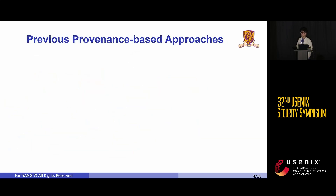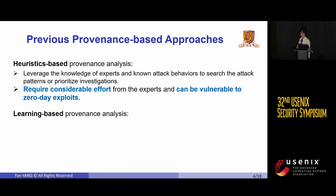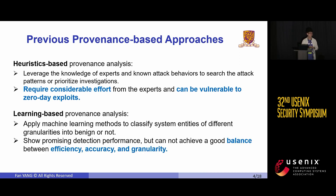Recent researchers have explored the use of data provenance for APT detection, categorized into two types: heuristics-based approaches and learning-based approaches. Heuristics-based approaches rely on expert knowledge and known attack behaviors to search for attack patterns or prioritize investigations, but they require considerable effort from experts and can be vulnerable to exploits. On the other hand, learning-based approaches employ machine learning methods to classify system entities of different granularities into benign or malicious. However, most existing learning-based approaches struggle to strike a balance between efficiency, accuracy, and granularity, even though they have shown promising detection performance.